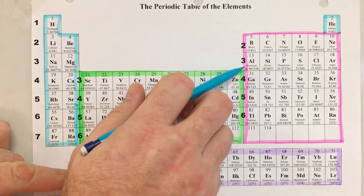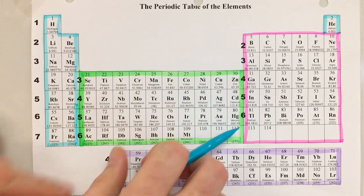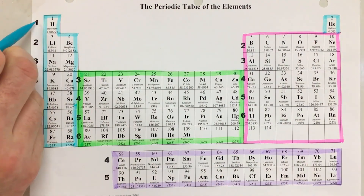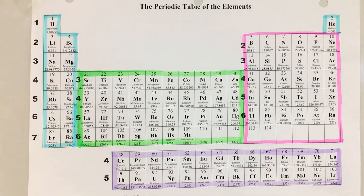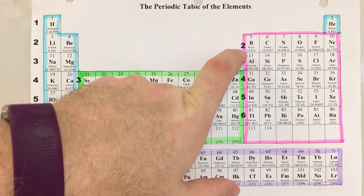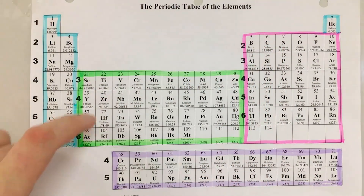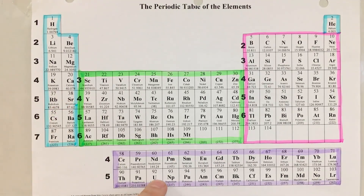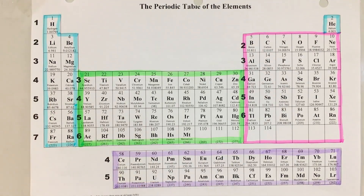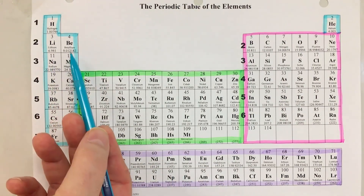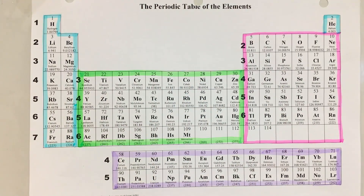Make note that helium, even though it's way over on the right, is still part of your first energy level. So if I put my finger on carbon, the first quantum number is 2. For yttrium, the first quantum number is 4. For uranium, the first quantum number is 5. By uranium, I mean the 93rd electron — the last electron in each of these particular orbitals.